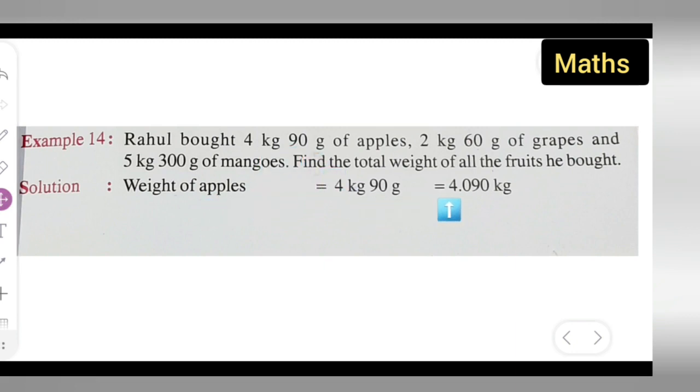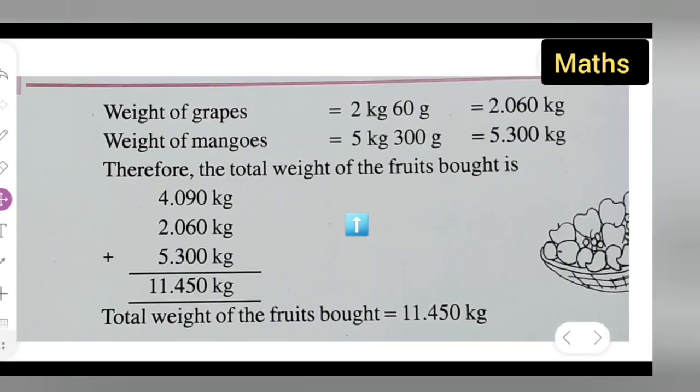Converted directly to kg, it will be 4.090 kg. Next, weight of the grapes is given to be 2 kg 60 grams, so it will be 2.060 kg.